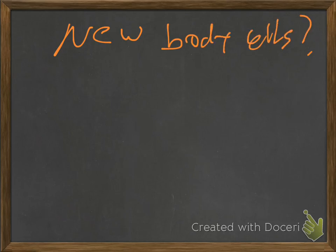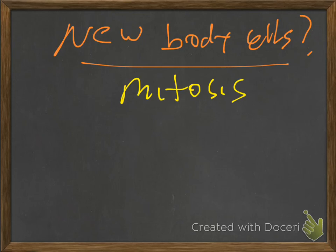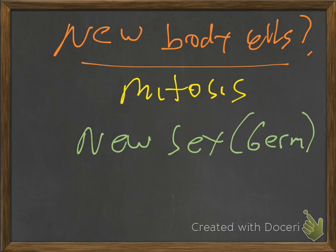So, to quickly review, if we want new body cells, what type of division are we going to undergo? I'll give you a second. That's right. It's going to be mitosis. Because we want each new cell to have an exact copy of that DNA. And then what is it if we need to make more eggs or sperm? We'll call those new sex cells. I think we also call them germ cells. What do we need? You're right. We need meiosis.